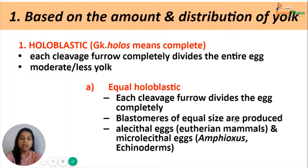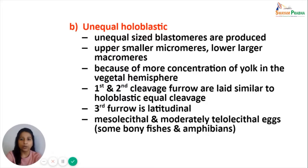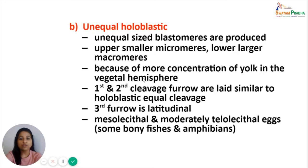The second type of holoblastic cleavage is the unequal type, in which unequal-sized blastomeres are produced. The first and second cleavage furrows are similar to equal holoblastic cleavage. The difference lies in the third cleavage furrow, which is latitudinal — slightly above the equatorial plane — resulting in two tiers of cells: the upper tier of smaller micromeres and the lower tier of larger macromeres. This happens because of higher yolk concentration in the vegetal hemisphere, and is seen in mesolecithal and moderately telolecithal eggs such as some annelids and amphibians.